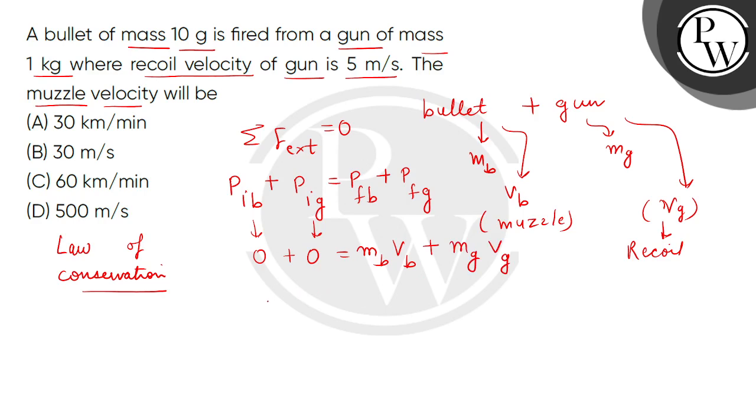So, children, here we can see mb vb is equal to minus mg vg. So, if we ignore the negative sign, then we will get the muzzle velocity of bullet equals mass of gun divided by mass of bullet multiplied by velocity of gun.